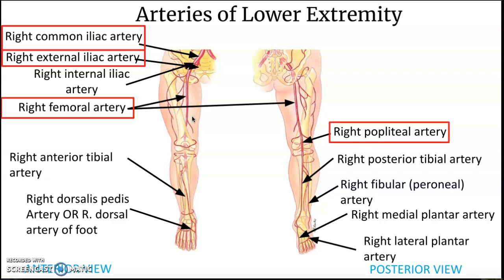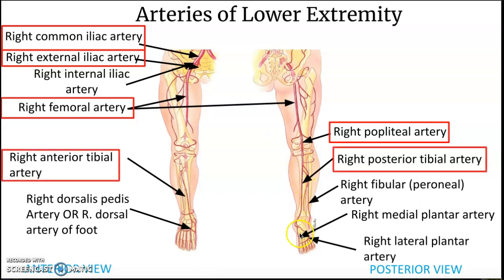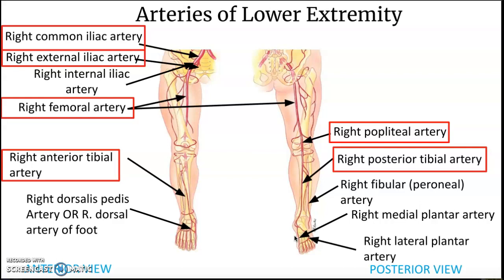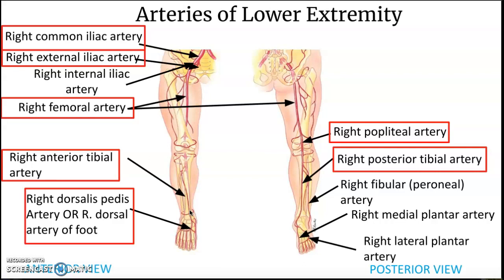Femoral refers to the thigh, and this turns into the right popliteal artery — popliteal is behind the knee. Make sure to orient yourself: this is the anterior view and the posterior view. Then we have the right posterior tibial artery — the tibia is that big bone in the leg, and it's posterior so it's behind the tibia. It branches in front for the right anterior tibial artery and the right dorsal artery of the foot — dorsal here means the top of your foot. It also branches into the right fibular artery, closer to the fibula.